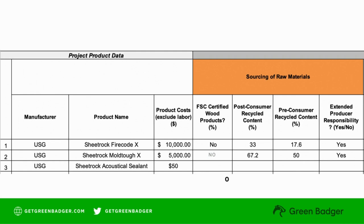As we fill out the LEED cover sheet, if a product is FSC certified, simply put yes. In our example here, there is no FSC certified wood product, so we put no. If the product has recycled content, you would fill out very specifically the post- and/or pre-consumer recycled content. In addition, if the product has a take-back program, simply type yes under the extended producer responsibility field. And don't forget to include the supporting documentation.